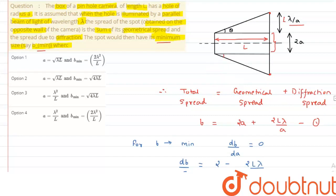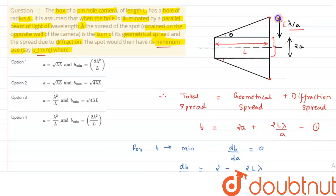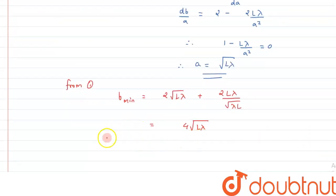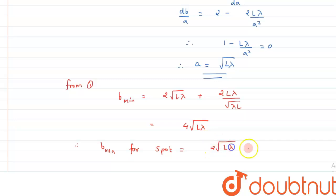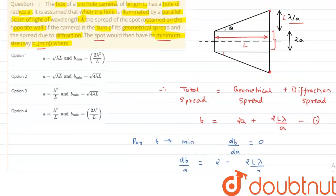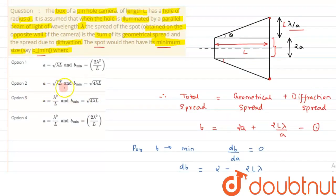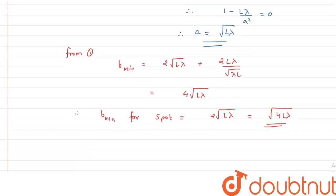This simplifies to 4 root L lambda, but this value represents the full diameter. We are interested in b minimum for a single spot, which is half this value. Therefore b minimum equals 2 root L lambda, which can also be written as root of 4L lambda. So a equals root L lambda and b minimum is root 4L lambda, making option B the correct answer.